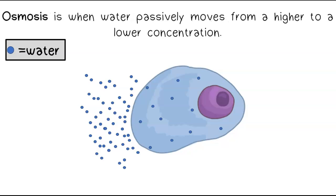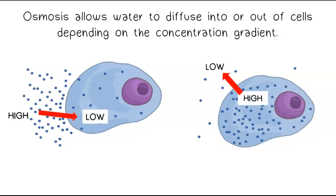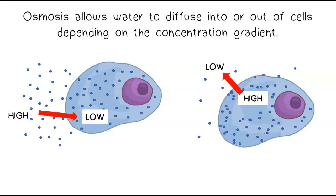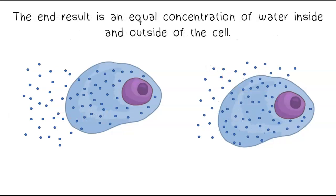Osmosis is when water passively moves from a higher to a lower concentration. Osmosis allows water to diffuse into or out of cells depending on the concentration gradient. The end result is an equal concentration of water inside and outside of the cell.